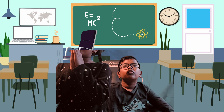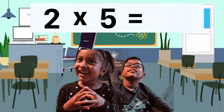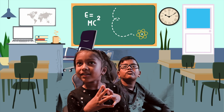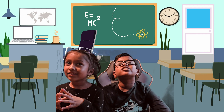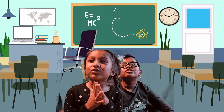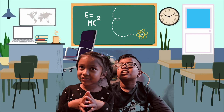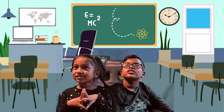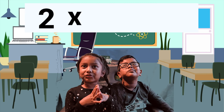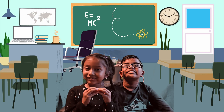2 times 5 is 10. 2 times 6 is 12. 2 times 2 equals 4.